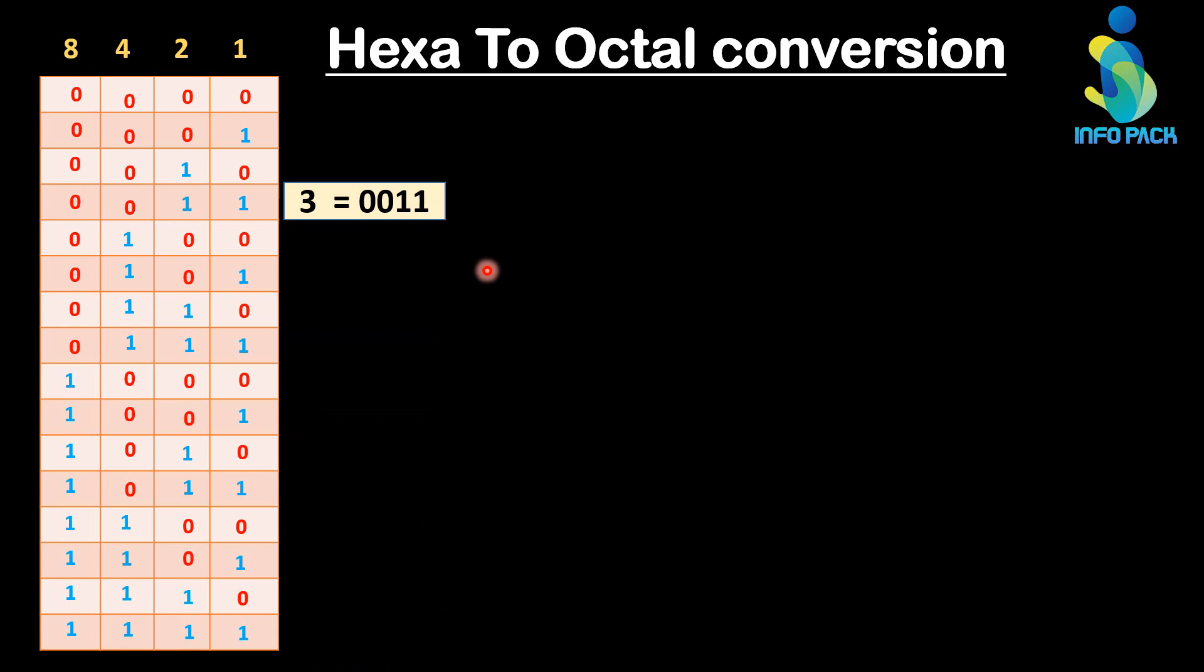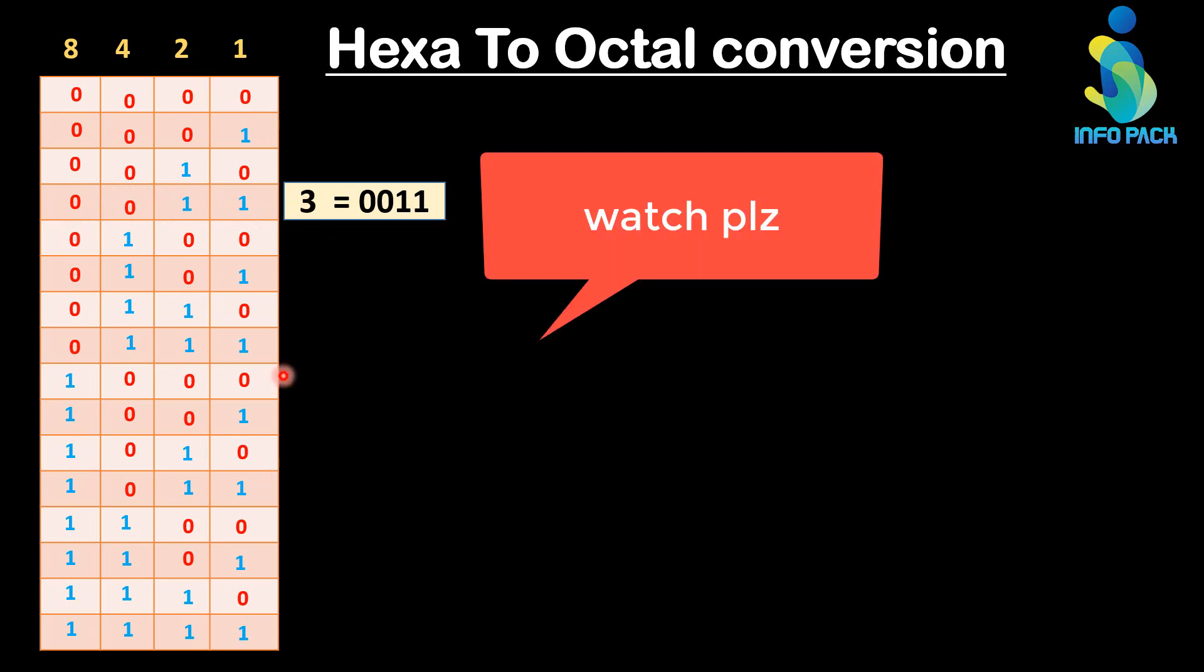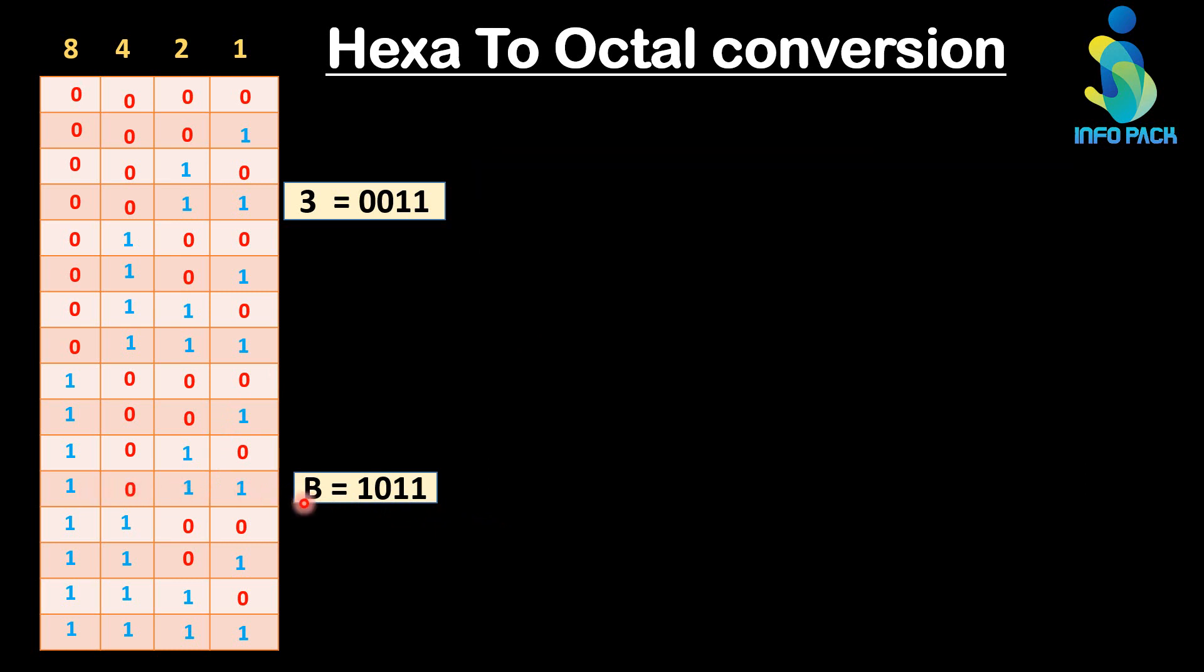First of all, we will check the binary of each digit. The binary of 3 is equal to 0011 in this table. How to make this table I have told in my previous video. The binary of B is equal to 1011.